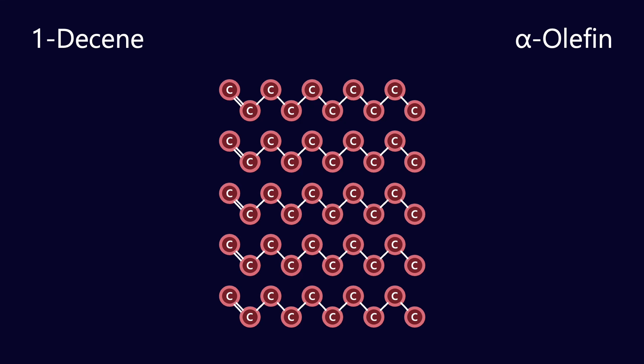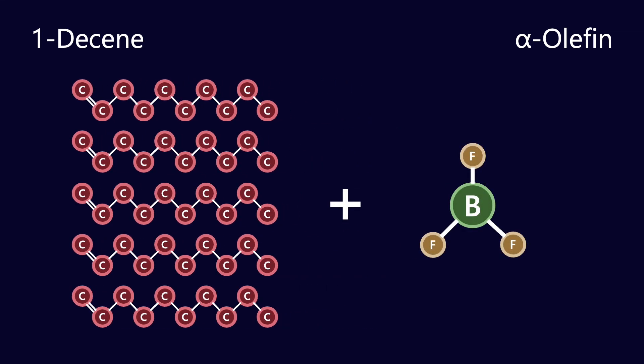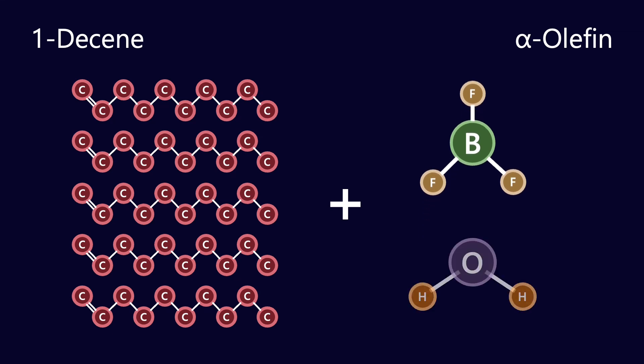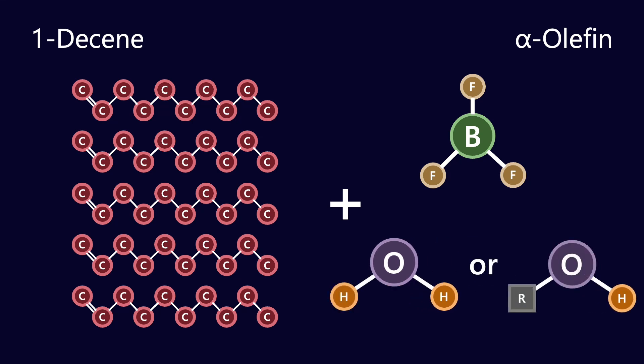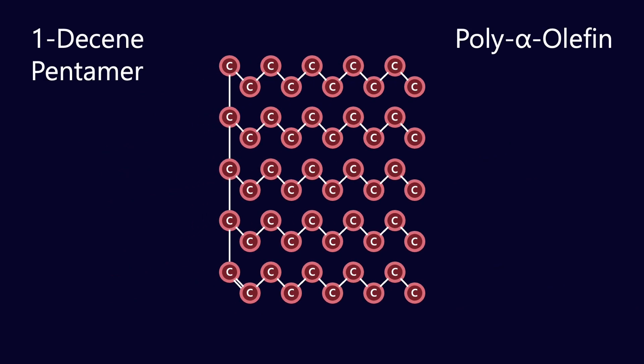This is the backbone of a PAO and when you make a polyalpha olefin it's an exercise in what they call oligomerizing it - connecting all of these molecules together with a steady backbone. In traditional methods they put it through a boron trifluoride catalyst or an acid catalyst and you quench the reaction with water or an alcohol.